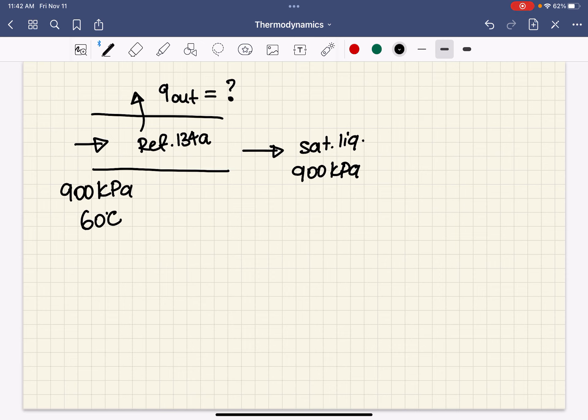So in this steady flow device, one inlet, one exit, and the mass flow rate inlet and exit conditions are given. We are just asked for an energy interaction, and the way to solve it is, of course, write down the energy balance.